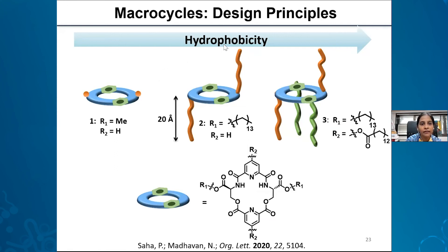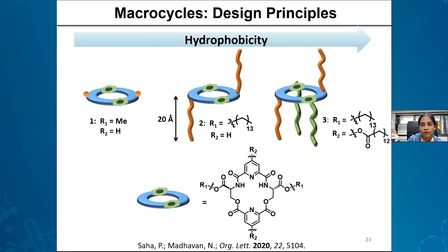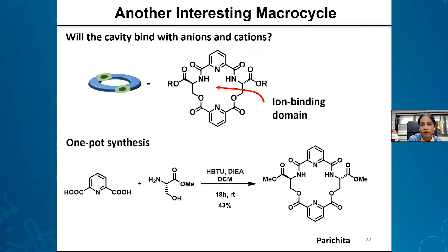Shalini asks: can synthesis of the ester form be done with HBTU? Yes, we were able to synthesize this, and I don't think Parichita had any DMAP in there.